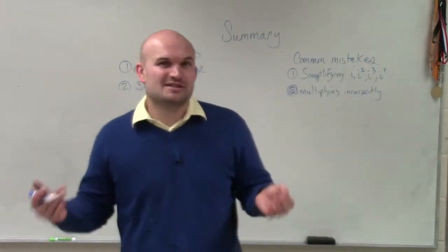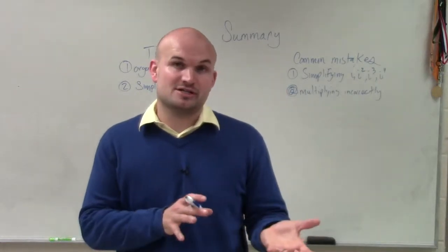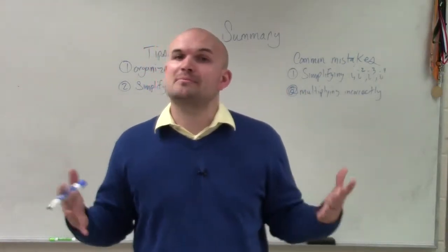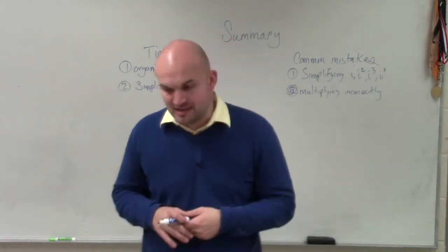And then the last thing is when we're multiplying, we're always going to be combining our imaginary terms, imaginary parts, as well as our real parts. So therefore, we get one complex number, which is in the form of a plus bi.